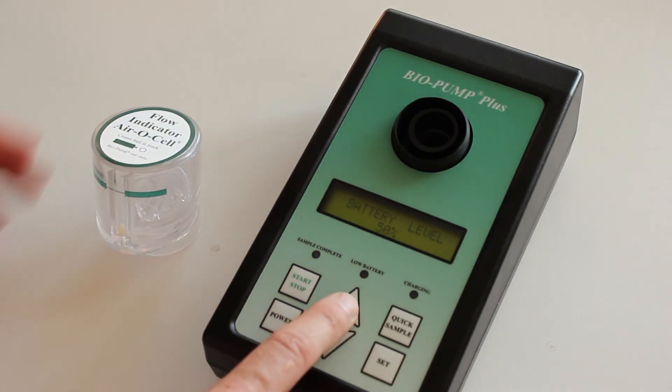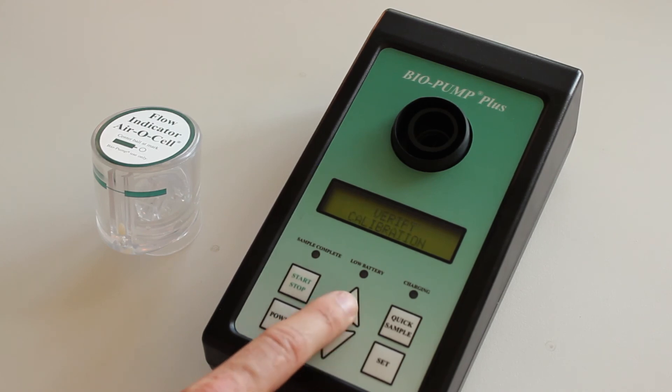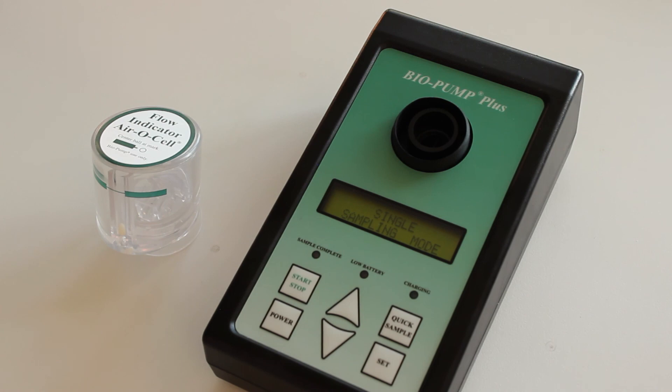How do you do this? Up, battery, single, sequential, and then you're back at calibrate. So they're the different modes. You can go quick sample or set depending on what time you'd like.